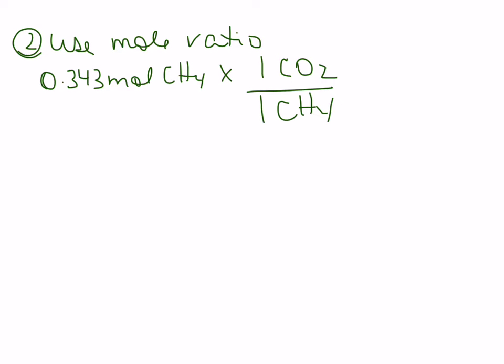Step two is to always use the mole ratio to convert to whatever you are looking for. So we're going to take our 0.343 moles of CH4 and multiply it by our coefficient. There's a 1 in front of our carbon dioxide and a 1 in front of our methane. So our methanes cancel and we have converted that to 0.343 moles of CO2.